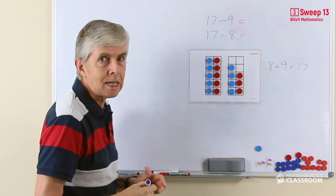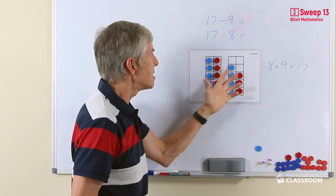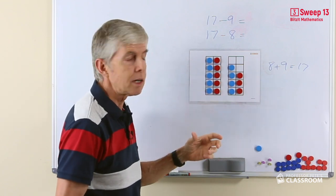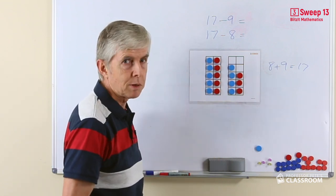Using the 10 frames, it quite neatly shows the two numbers 8 and 9 combined together, so we can imagine the 8 red counters being taken away or the 9 blue counters being taken away.